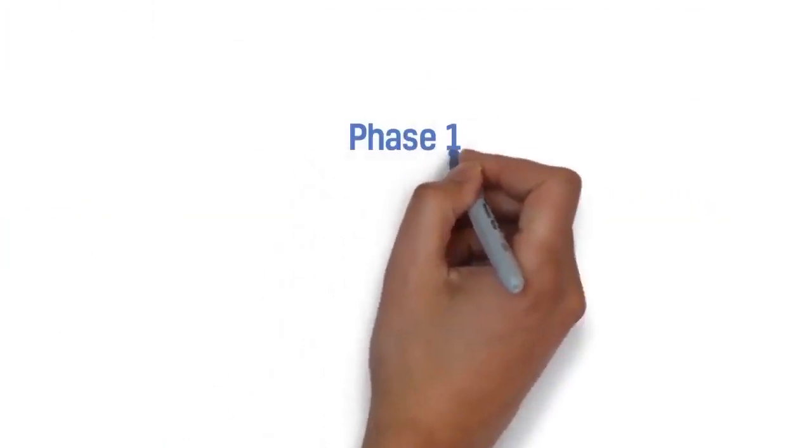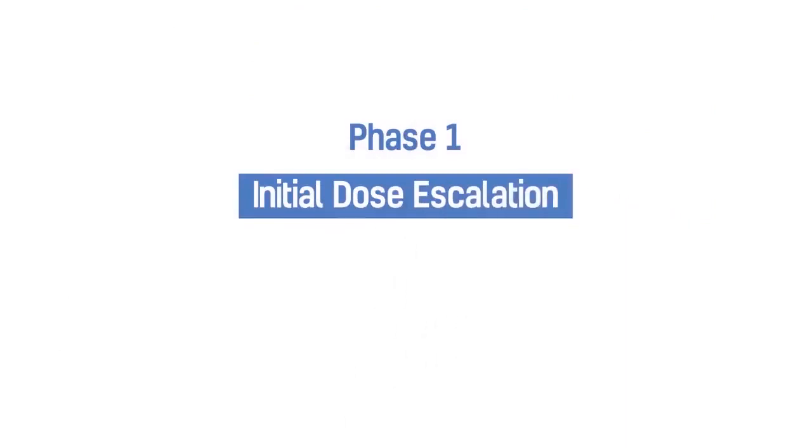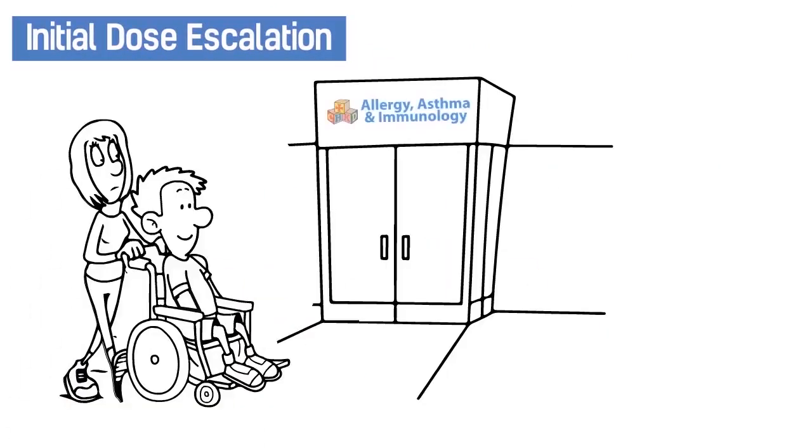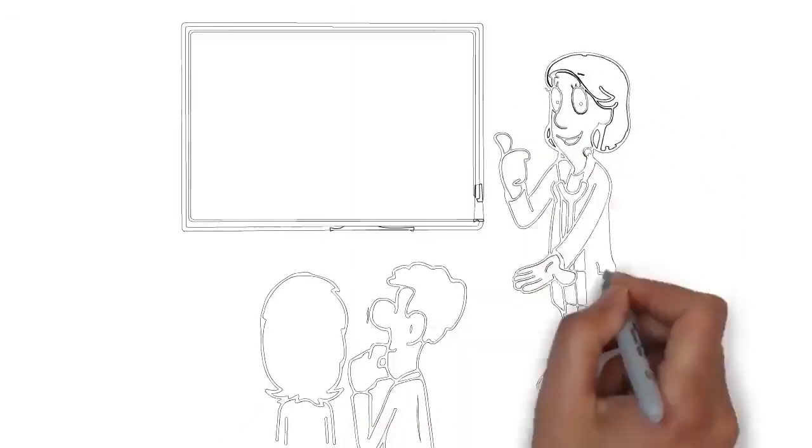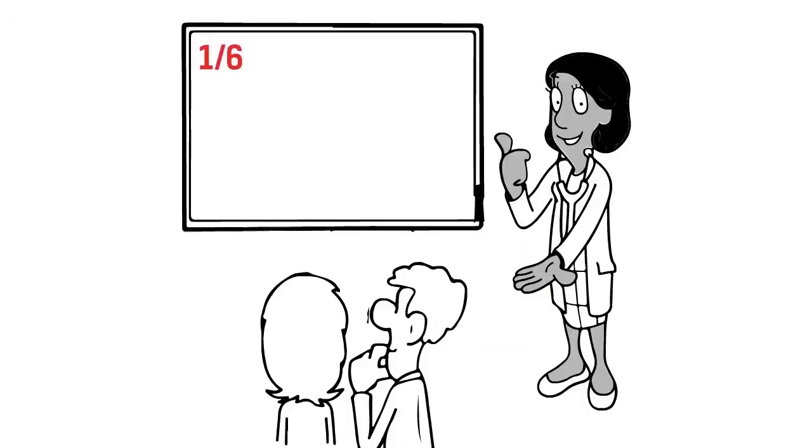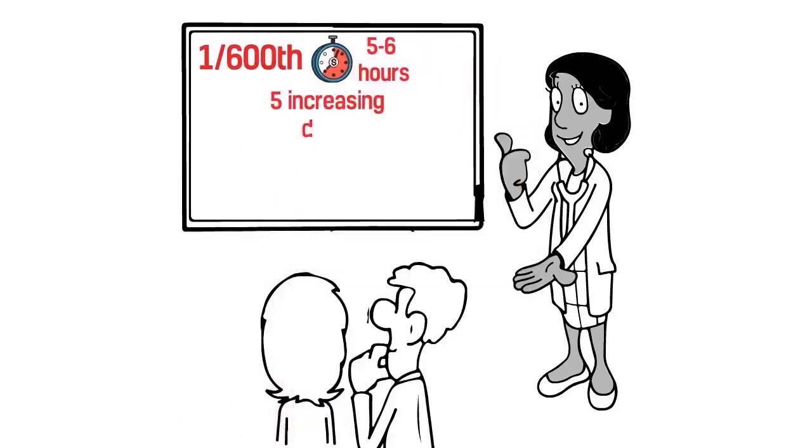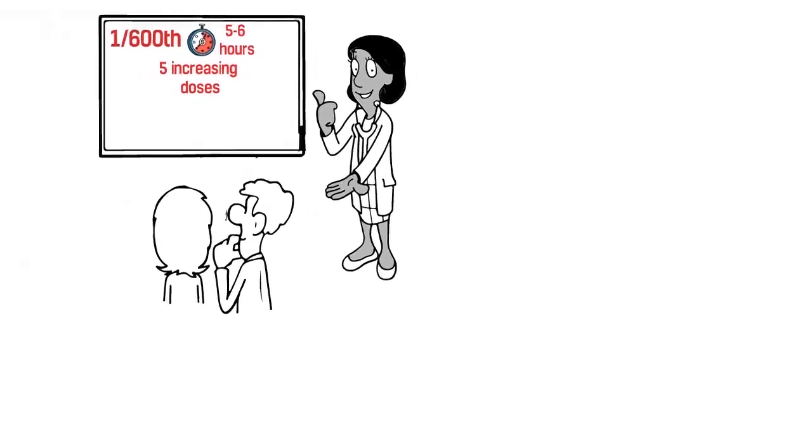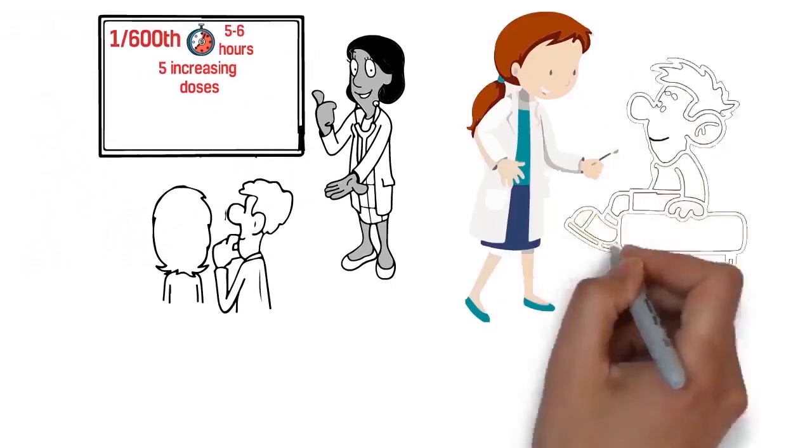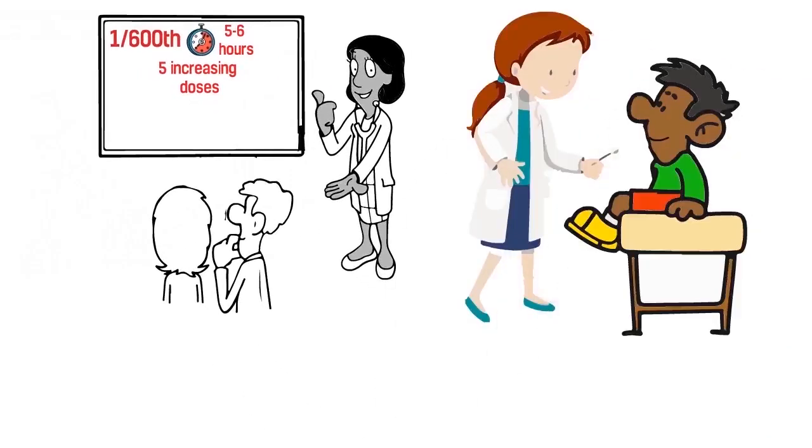Phase 1. Initial dose escalation. This phase of treatment happens in our office under close medical supervision. We start very small, giving your child about 1-600th of a peanut kernel. Over the next 5-6 hours, we give 5 increasing doses, observing your child after each step and monitoring closely for signs of an allergic reaction.